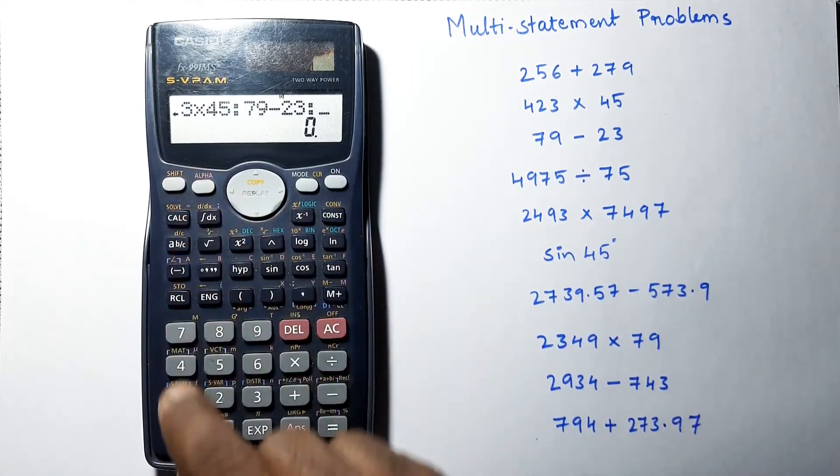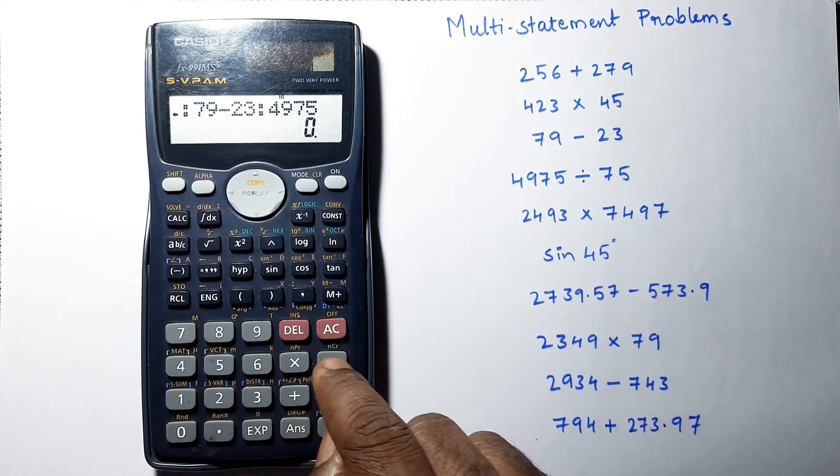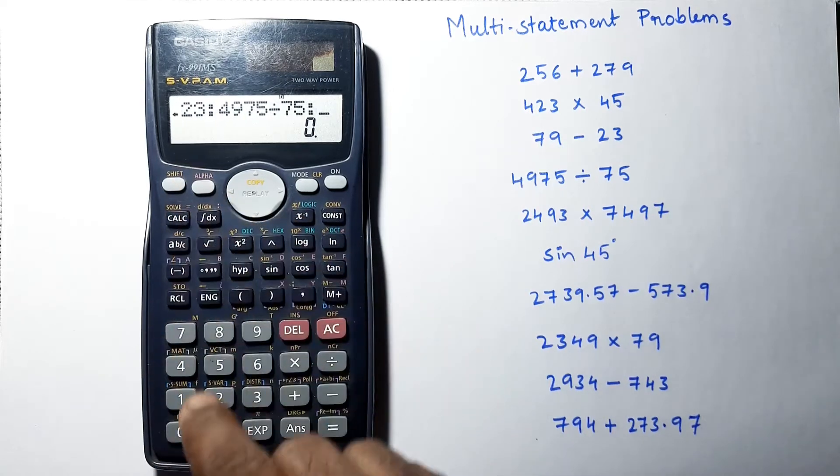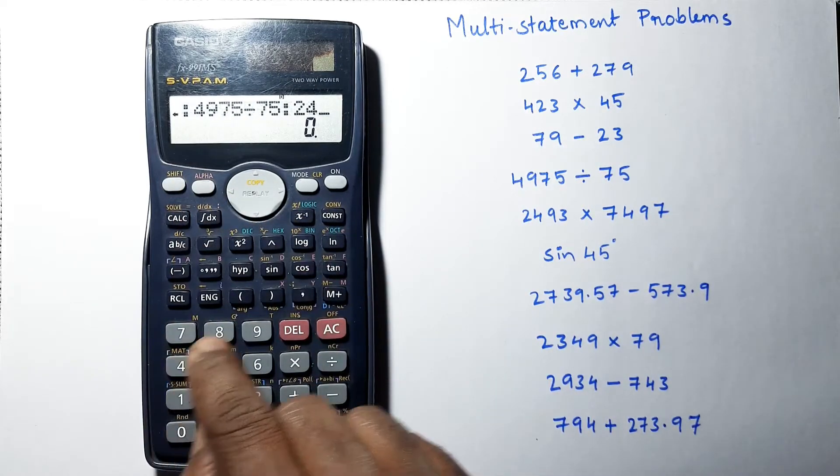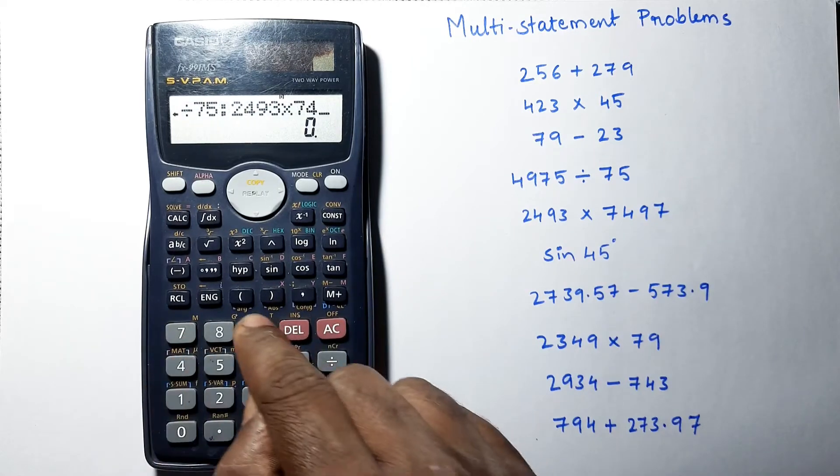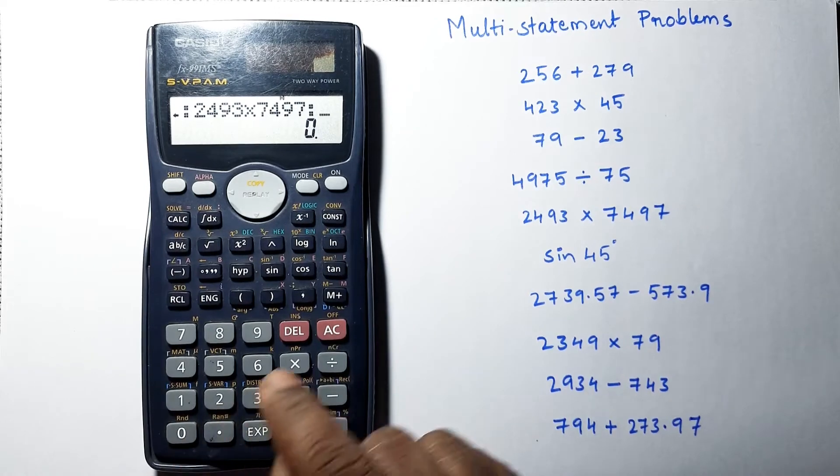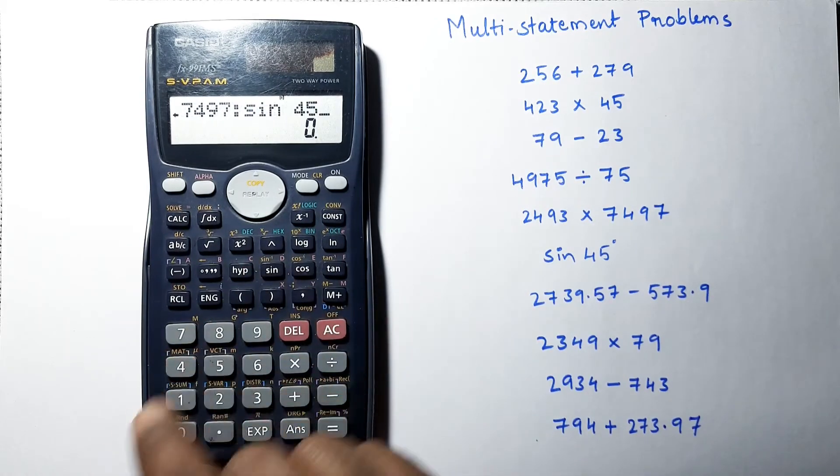Colon, 2493 multiplied by 7497, colon, sin 45.